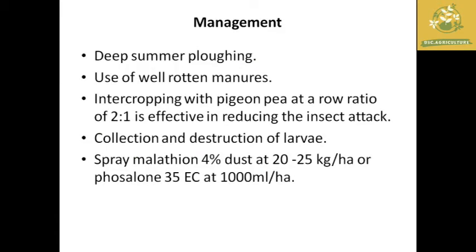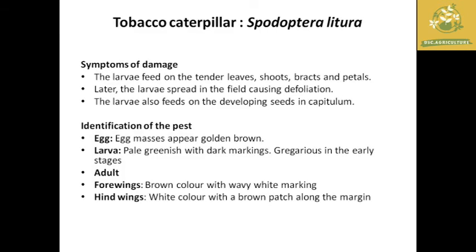Management of Bihar hairy caterpillar includes deep summer plowing and use of well-rotted farmyard manure. Intercropping with pigeonpea at a ratio of 2:1 effectively reduces insect attack in the sunflower field. Collection and destruction of larvae at early stages and collection and destruction of egg masses are effective methods. Spray malathion 4% dust at 20 to 25 kg per hectare or phosalone 35 EC at 1000 ml per hectare as effective chemical control.